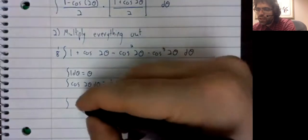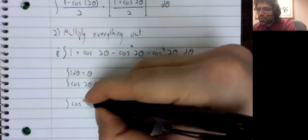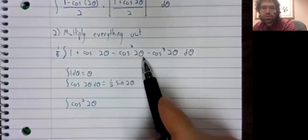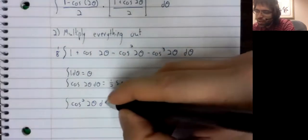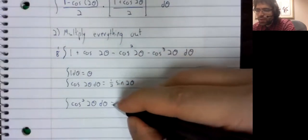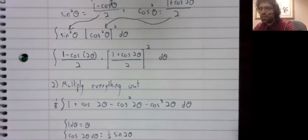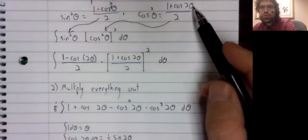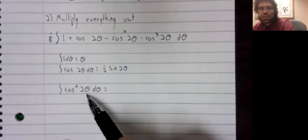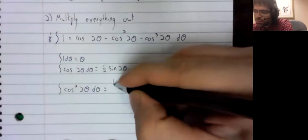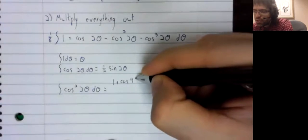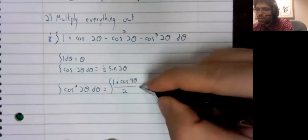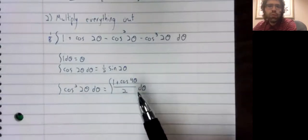When we integrate the cosine squared of two theta, we'll be subtracting this, but I'm just looking at this right now. We'll hit it with our reduction of power identity a second time. So theta turns to two theta. So when we apply this identity to two theta, that's going to turn to four theta. And this is an integral we can take.